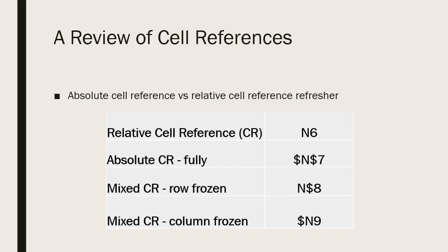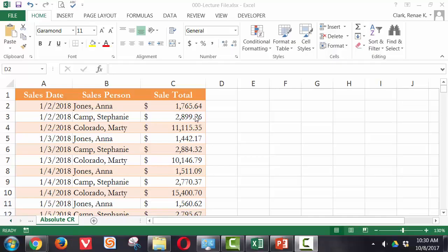Using the mixed references, the row is frozen in the first mixed reference example: N$8, indicating the dollar sign locks in row 8. In the fourth example, $N with a dollar sign in front of it shows that column N is locked in place and the row number 9 is not. Let's look at an example.